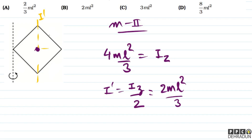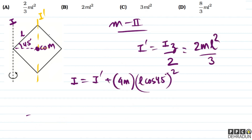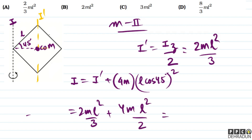पूरे square frame का center of mass यह है, और इसके about I' = 2ML²/3 आ रहा है। Required axis के about: I = I' + 4M × (L·cos45°)² = 2ML²/3 + 4M × L²/2 = 2ML²/3 + 4ML²/2। यह calculate करके 2ML²/3 + 2ML² = 2ML²/3 + 6ML²/3 — wait, 2ML²/3 + 4ML²/2 = 2ML²/3 + 2ML² = 8ML²/3।